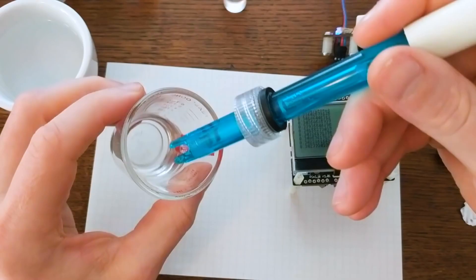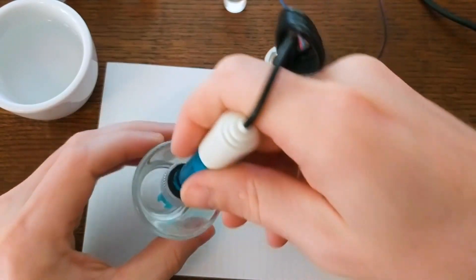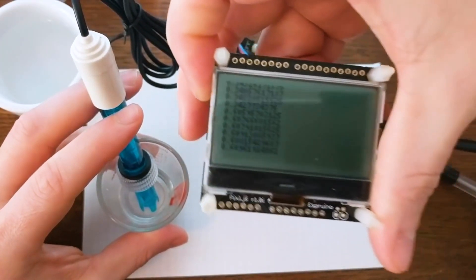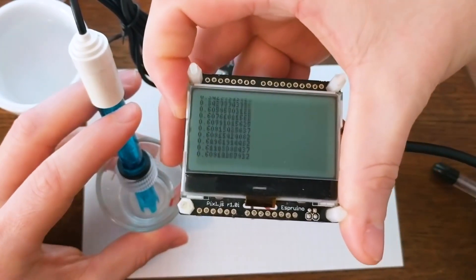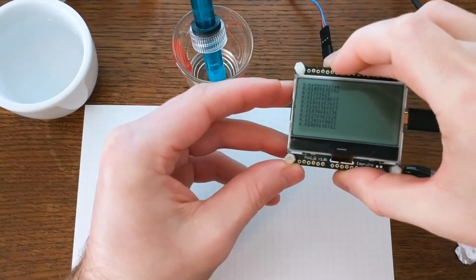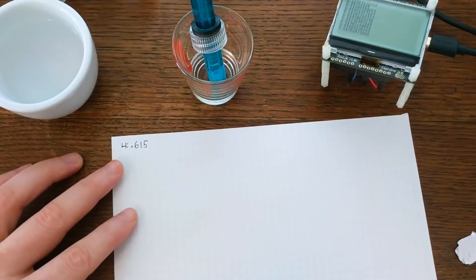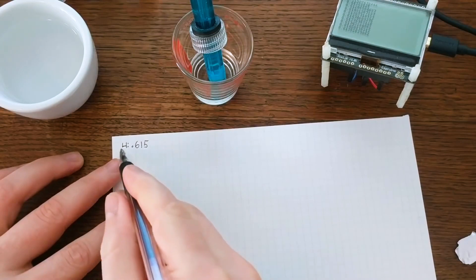After cleaning the probe off really well, I've put it in the pH 4 solution and started to take measurements. They seem to have a good amount of variance, so I let it sit in the solution for a few minutes. After a while, it was clear that the reading here was somewhere around 0.615, so this is the value I've recorded for pH 4.